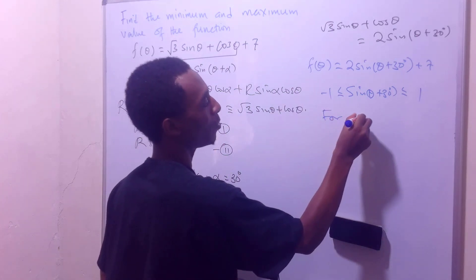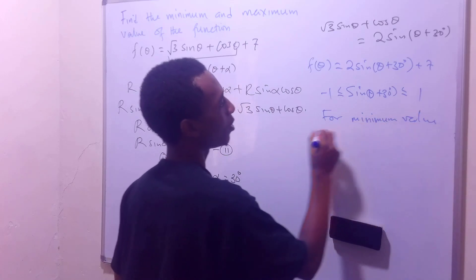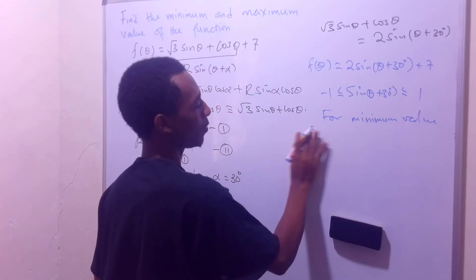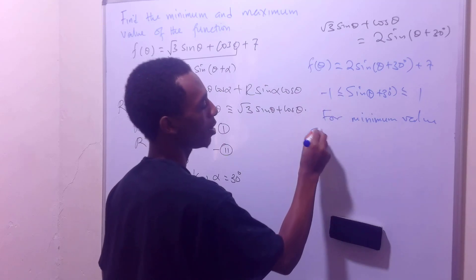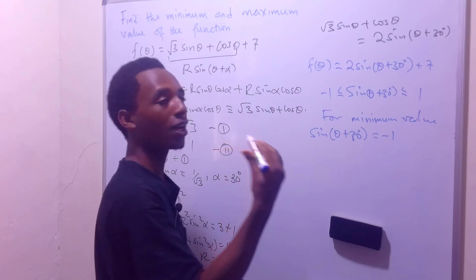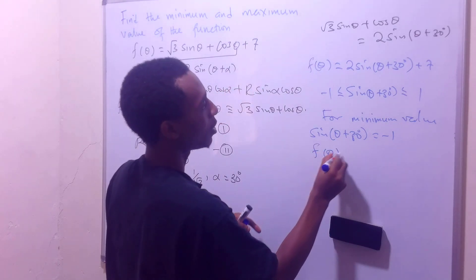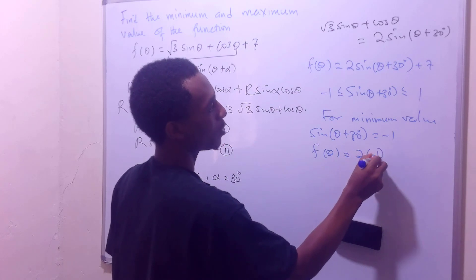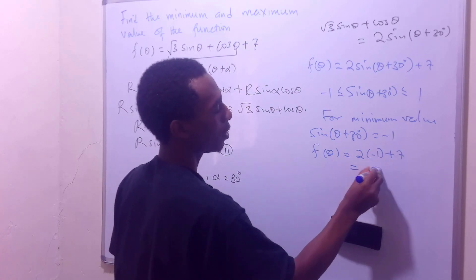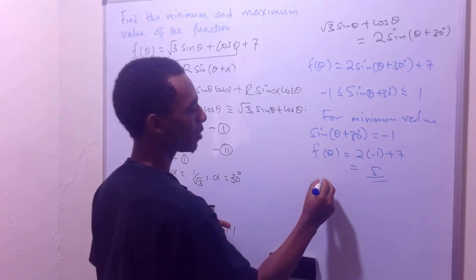So I'll say for minimum value, we'll have sin(θ + 30°) = -1. So f(θ) = 2(-1) + 7, which is 5. So that's the minimum value of this function.